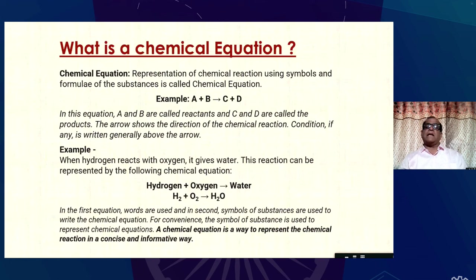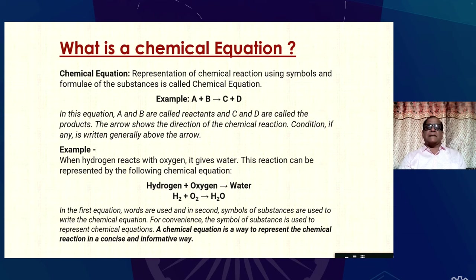What is a chemical equation? Representation of a chemical reaction using symbols and formulae of substances is called a chemical equation. For example, A + B → C + D. In this equation, A and B are called reactants and C and D are called products. The arrow shows the direction of the chemical reaction. If there is any condition, it is generally written above the arrow.